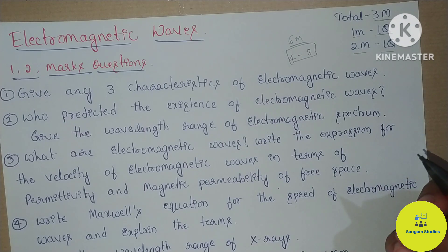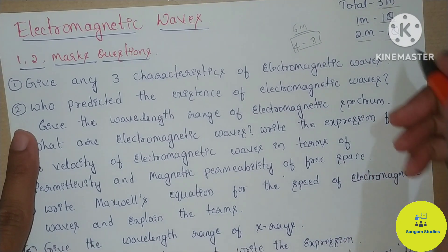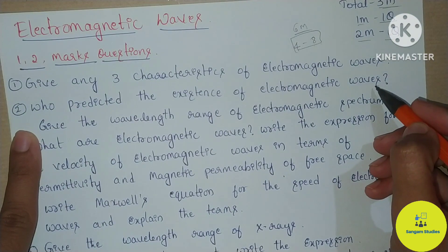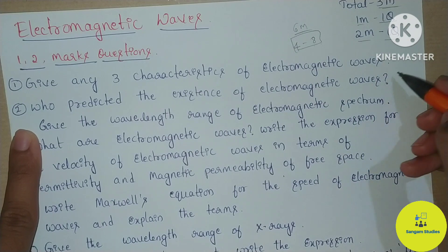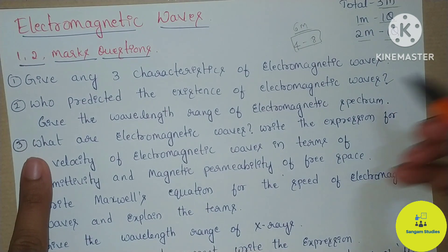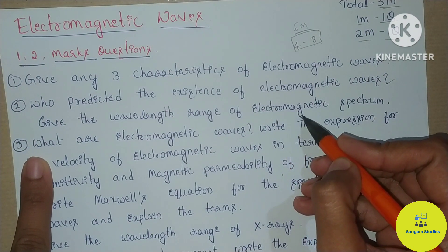First important question: characteristics of electromagnetic waves — two marks. Second: electromagnetic waves existence — scientist name and wavelength range of the electromagnetic spectrum — two marks.